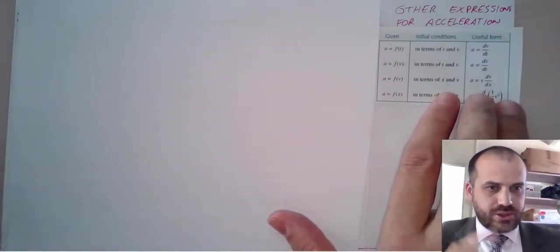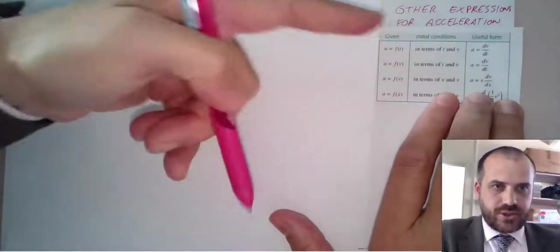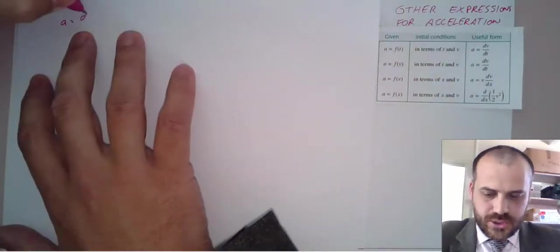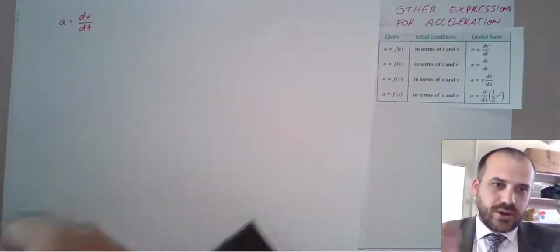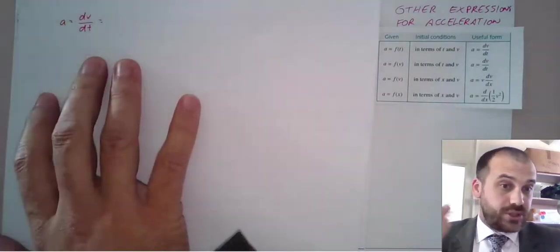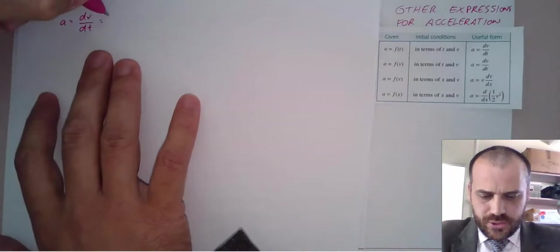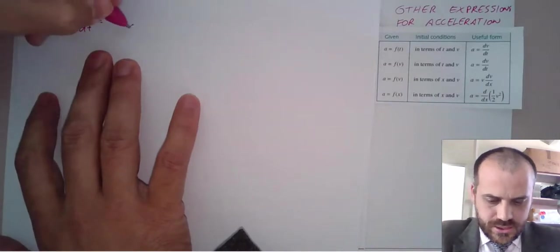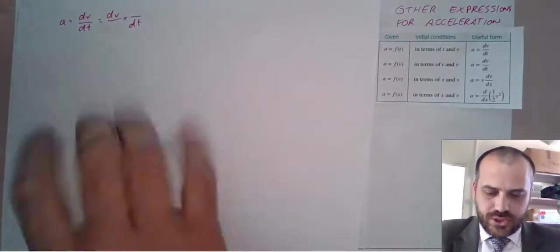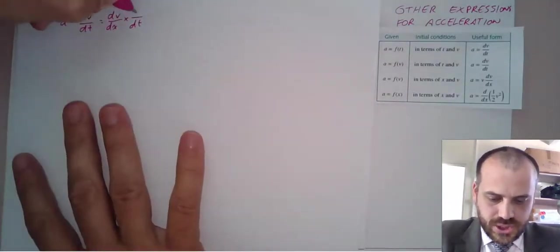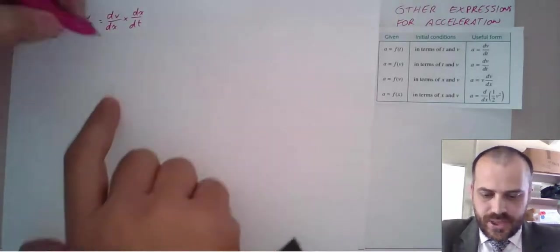This one here, we can actually just grab it from those first two because we know that acceleration is equal to the derivative of velocity with respect to time. And we know that we can do some fancy stuff with the chain rule, including writing DV, DT times, and then putting whatever change we want there. And I'm going to choose to write with respect to position, with respect to position there.